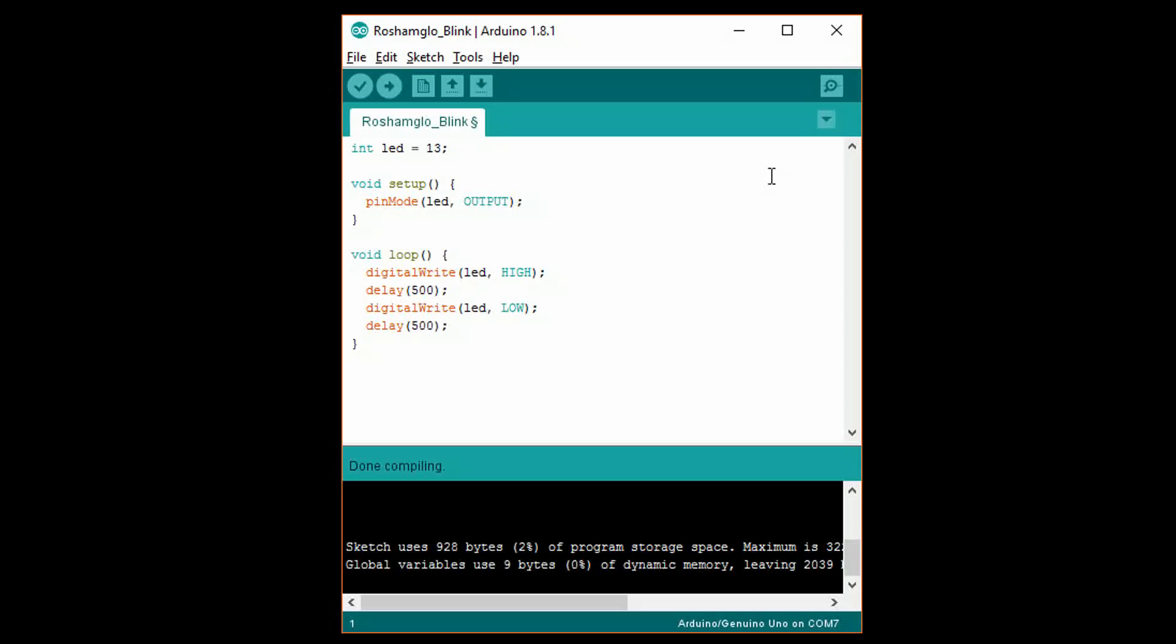You can also change values in variables later in the program. For example, at the end of our code and loop, add led equals 5 semicolon. After running through the loop once, which causes our led to blink once, the pin numbers then change to 5, so the next time through the loop, digital write will attempt to write to pin 5, and our led will stop blinking.